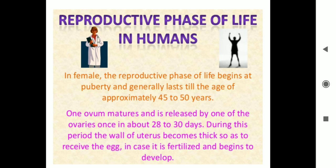Next, reproductive phases of humans — meaning across a human life. In females, the reproductive phase of life begins at puberty and generally lasts till the age of 45 to 50 years.